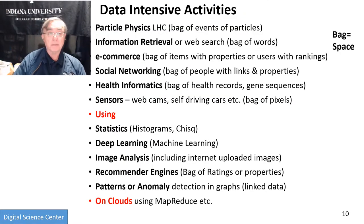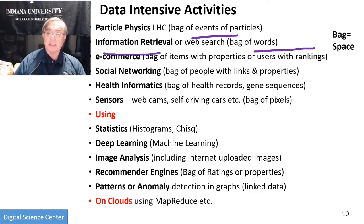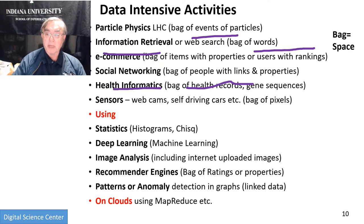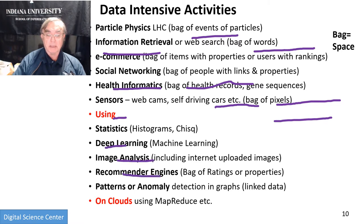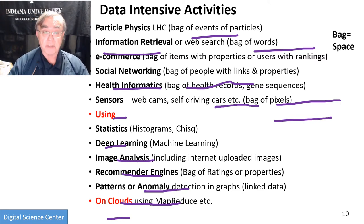Here are some data-intensive activities. Particle physics is a bag of events; information retrieval is a bag of words; e-commerce is a bag of items to be sold or users trying to buy things; social networking is a bag of people with links and properties; health informatics is a bag of health records and a bag of gene sequences; sensors produce lots of pixels — a bag of pixels. These applications use statistics, deep learning, image analysis, recommender engines, or anomaly and outlier detection, and they do this on clouds. This slide gives a nice example of a rich set of fields in different spaces with a range of tools all running on clouds, using variants of averages.